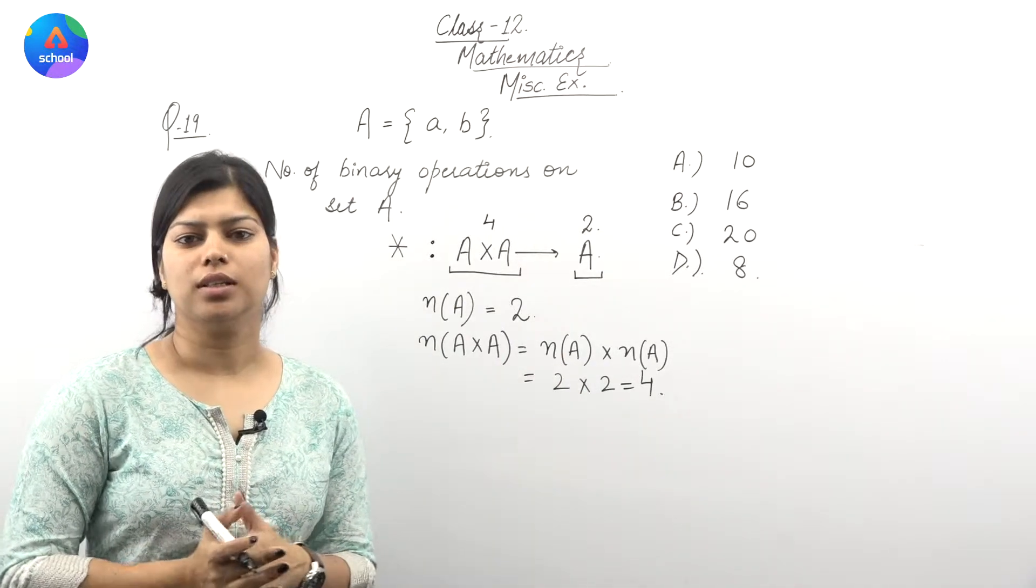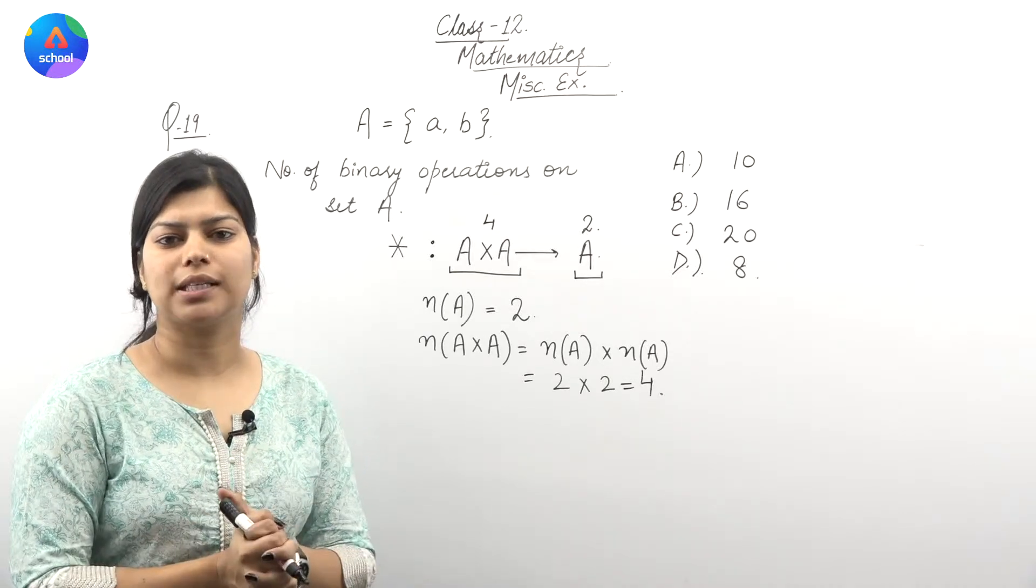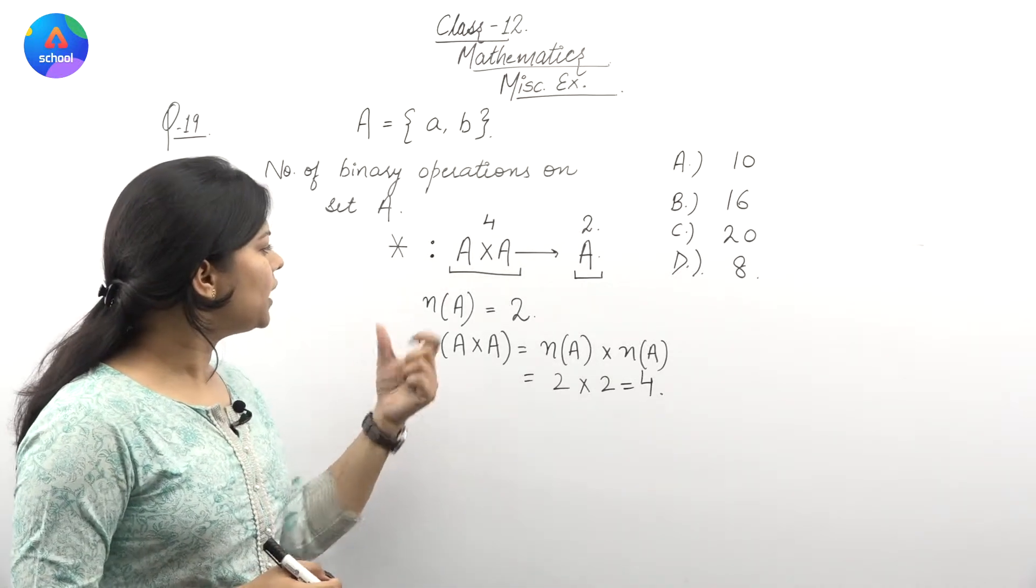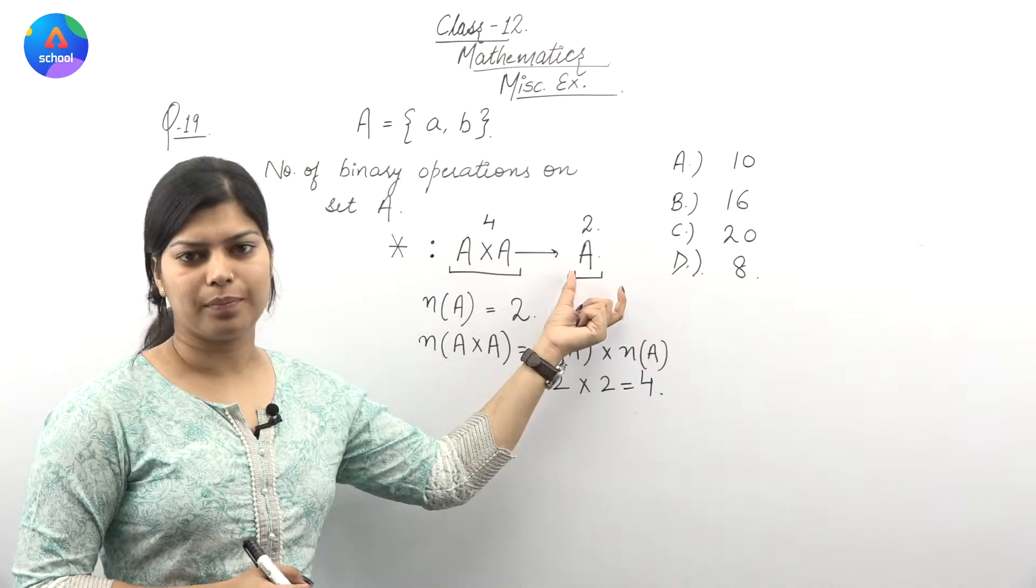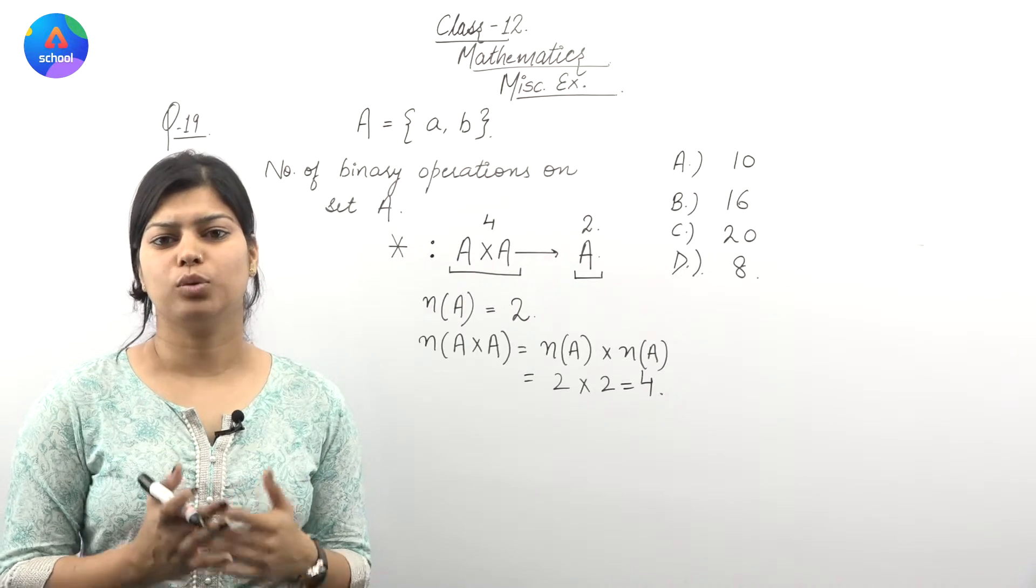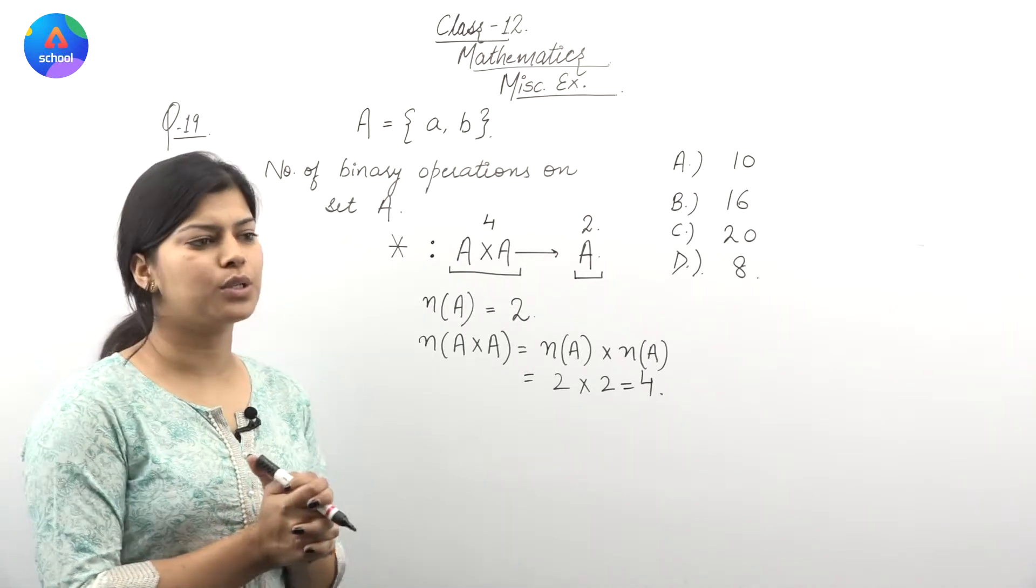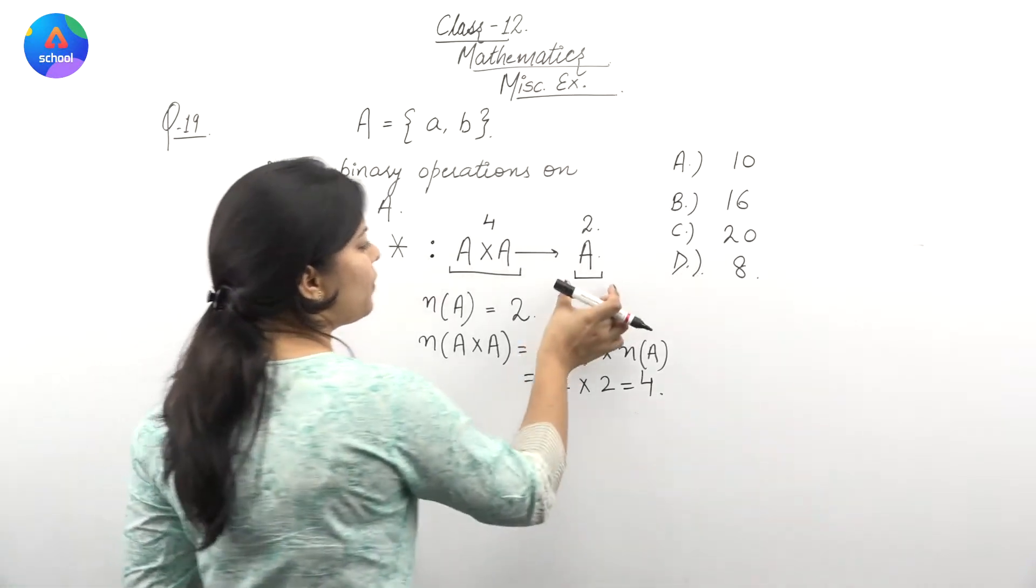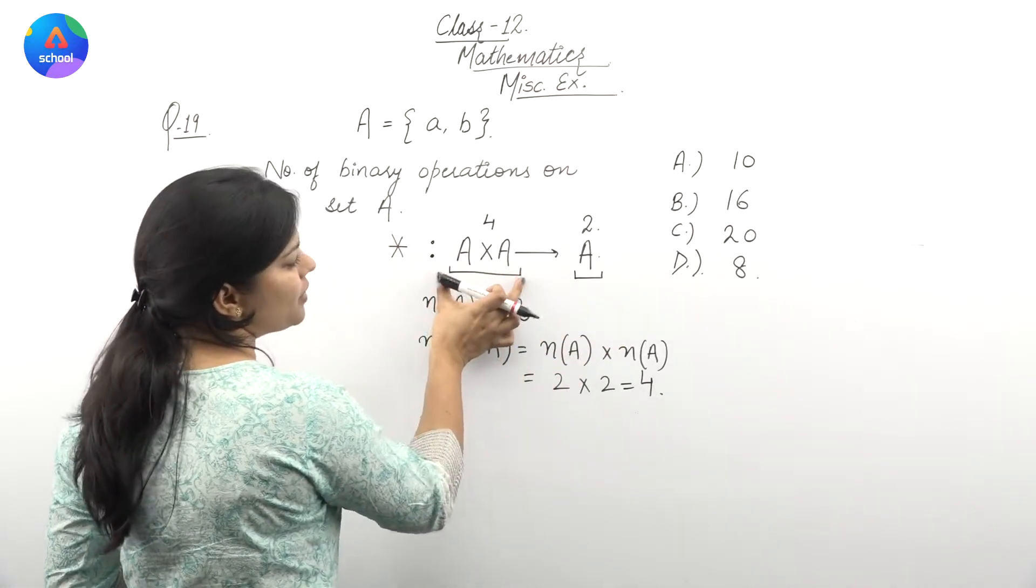When we check a relation or a function from A to B, how do we find the number of relations? We find n(B) raised to the power n(A). The number of elements in B raised to the power of number of elements in A.